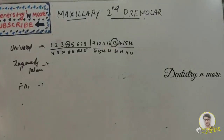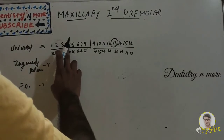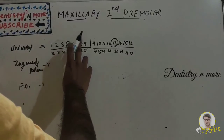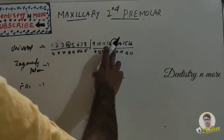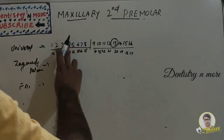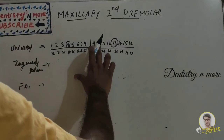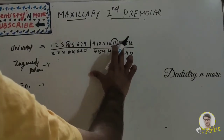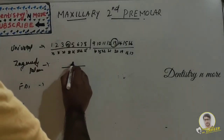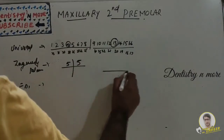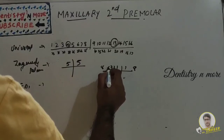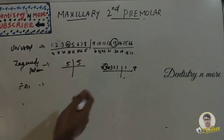We have three systems of tooth numbering. In the Universal system, the right maxillary second premolar will be 4 and the left second premolar will be 13. In the Zsigmondy-Palmer system it will be 5, because it starts from 1 to 8: central, lateral, canine, first premolar, second premolar on both sides.